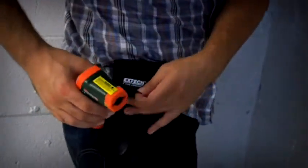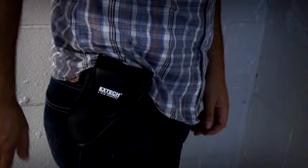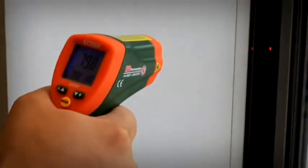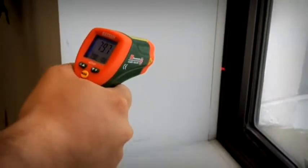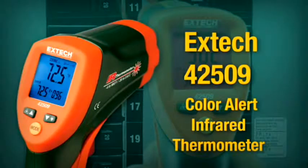The X-TEC 42509 comes complete with a case and 9-volt battery. With the X-TEC 42509, you can save time and scan components more efficiently by simply looking for a color change.